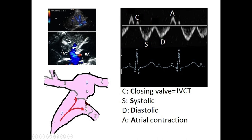At the end of IVCT, continuing right ventricular contraction pulls the right atrial floor toward the apex, creating negative pressure in the right atrium. This negative pressure sucks blood from the hepatic vein toward the IVC and right atrium. Blood flows away from the transducer, creating a negative deflection on the Doppler called the S wave — because it results from right ventricular systolic contraction.